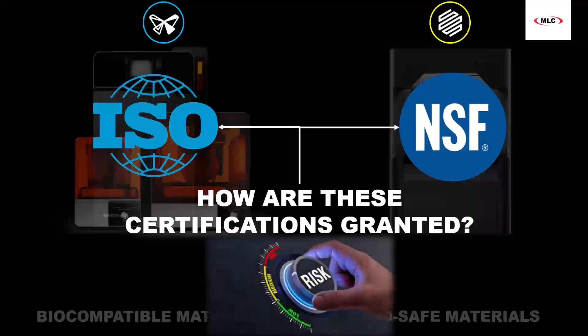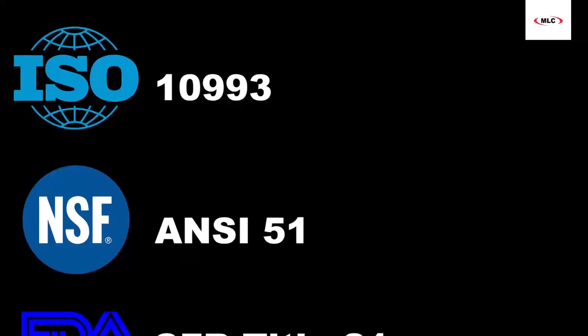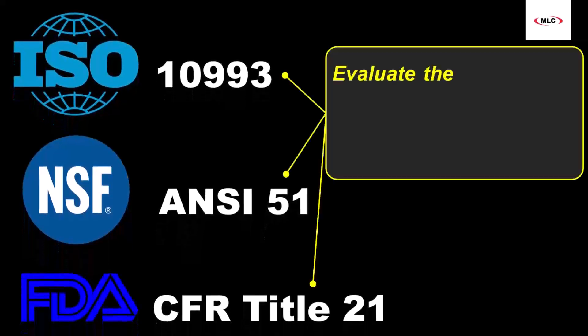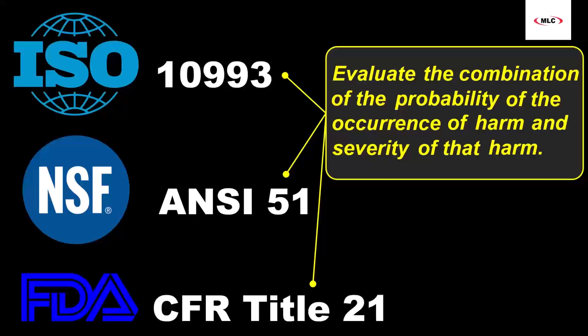And it's all about risk. The certifications that grant a material or product as biocompatible per ISO 10993, or food-safe per NSF ANSI 51, or FDA CFR Title 21, evaluate the combination of the probability of the occurrence of harm and severity of that harm. Just a fancy way of defining risk.